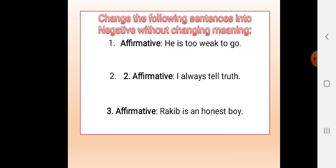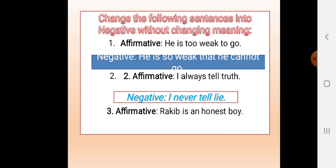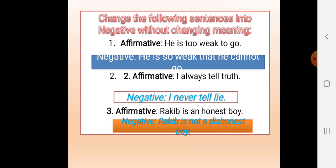Now you see: change the following sentences into negative without changing the meaning. I will check your understanding. First, affirmative: 'He is too weak to go.' Second, affirmative: 'I will always tell the truth.' Third: 'Rakib is an honest boy.' Now you see the answers. First: 'He is so weak that he cannot go.' Second: 'I never tell a lie.' Third: 'Rakib is not a dishonest boy.'